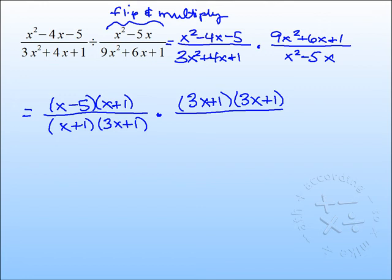x squared minus 5x. Well, don't freak out if there's only two terms. Remember the first rule in factoring is to pull out the GCF. Notice both terms have an x, so we'll pull that out, and we'll be left with x minus 5. It's all factored.